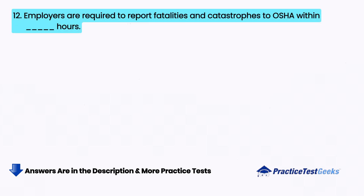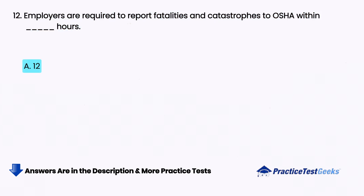Employers are required to report fatalities and catastrophes to OSHA within blank hours. A. Twelve, B. Twenty-four, C. Eight, D. Four.